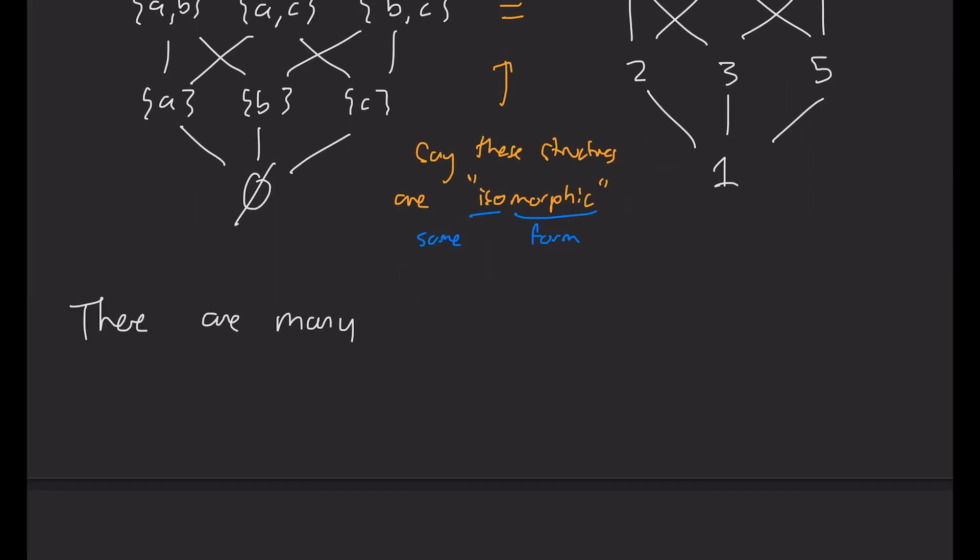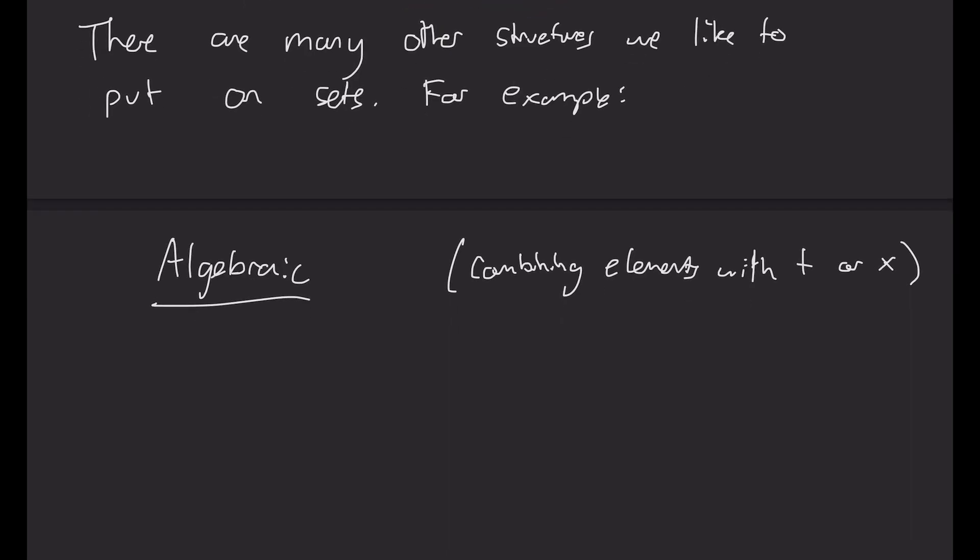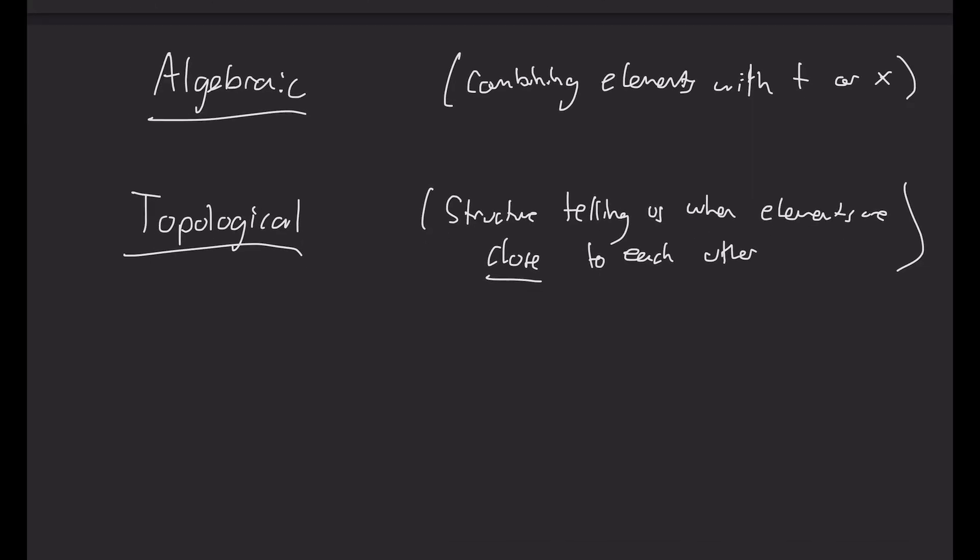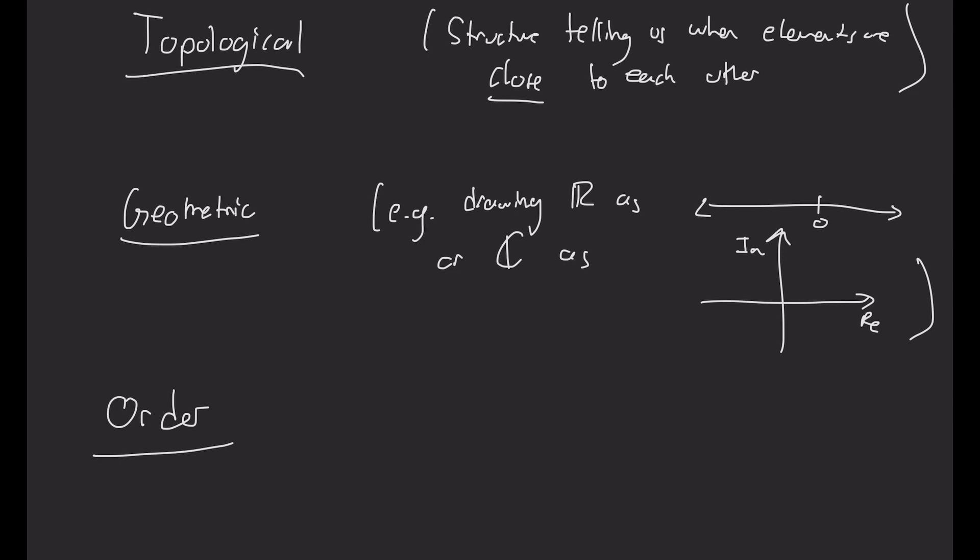There are many other structures that we can place on sets. It doesn't have to be order like this. One of the more common ones is algebraic. Stuff like groups, vector spaces, rings. And those are combining elements with addition and multiplication, for example. Or we can also place some kind of topological structure on a set, which tells us how elements are close to each other or far away from each other. So stuff like metric spaces or topological spaces. We can also place some geometric structure on it. So for example, every time you draw R as a line, you're implying some kind of geometric structure to R or the complex numbers as some plane. Or we can place some kind of order structure. So comparing elements like we did above, we get all kinds of interesting graphs and shapes like that.